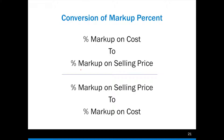When you have a percent markup on cost or you have a percent markup on selling price, you can convert from one to the other. So basically, if I have a percent markup on cost, I can convert it to a percent markup on selling price. And if I have a percent markup on selling price, I can convert it to a percent markup on cost, in order to use those percentages to help figure out the rest of the markup things that we know. It all depends upon the information that we're given.